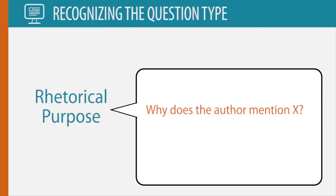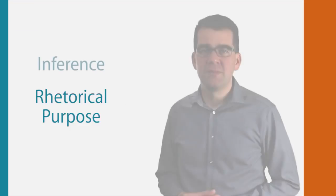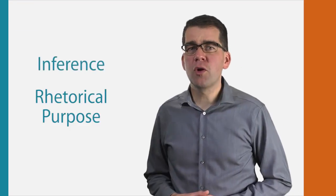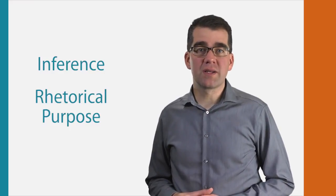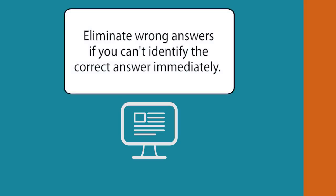Rhetorical Purpose Questions are similar because they also ask for information not explicitly stated. These will ask why the author has presented a piece of information. One way to approach these types of questions, if you can't identify the correct answer immediately, is to eliminate wrong answers. You will see more on this as we go through the example.